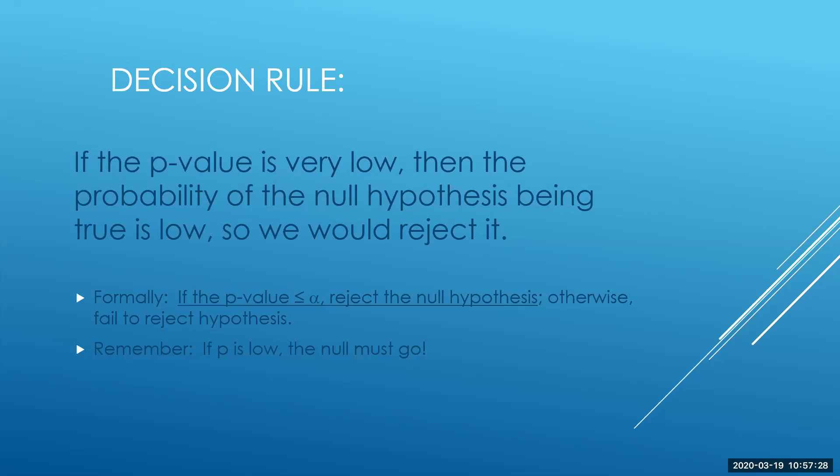So again, the basics of it is, if the p-value is too low, at least as low as the alpha value, our significance level, if the p-value is that level or lower, we're going to reject the null hypothesis in favor of the alternative. So here's a little mnemonic to remember. If p is low, the null must go. It's really just as simple as that. Hope that helped.